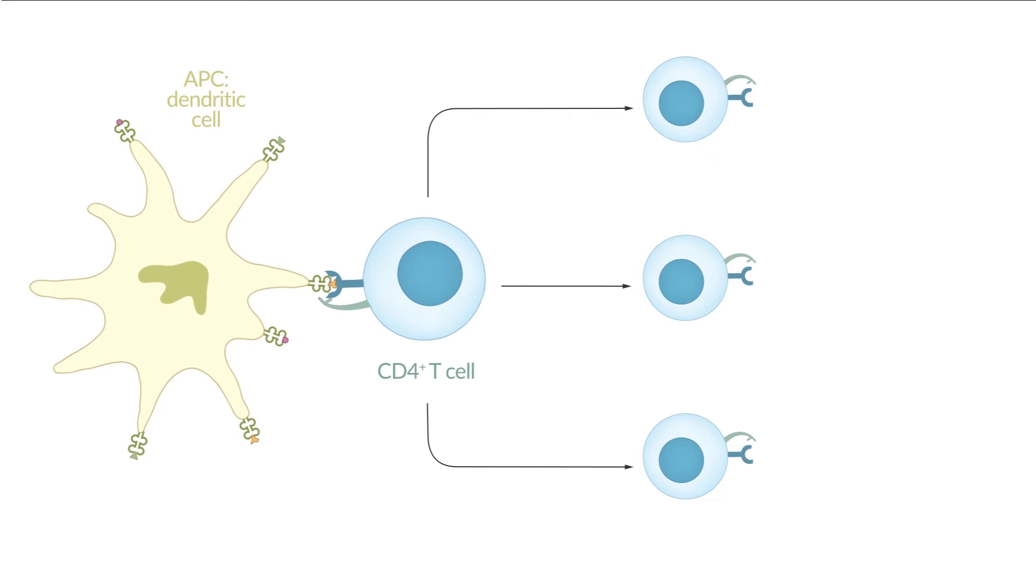A special group is the follicular helper T cells, in short, TFH cells, which are important for B cell activation. We'll get back to them again later.